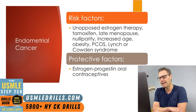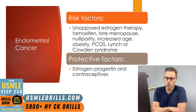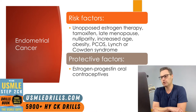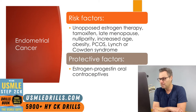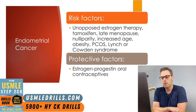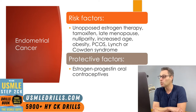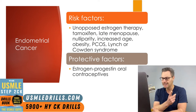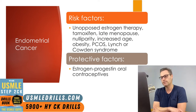Tamoxifen is another exogenous drug that can contribute to the development of endometrial cancer because it is a selective estrogen receptor modulator. Depending on the target organ, it may act as an estrogen agonist or as an antagonist. In the case of the endometrium, it acts as an estrogen antagonist in premenopausal patients because these patients have high levels of endogenous estrogen. But once patients are postmenopausal, tamoxifen is an estrogen agonist, and the risk of endometrial cancer increases with higher doses and longer durations of use.